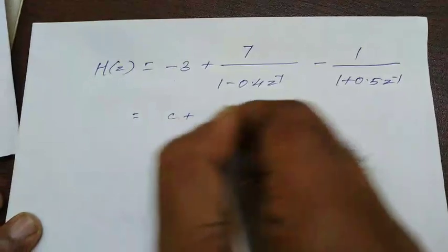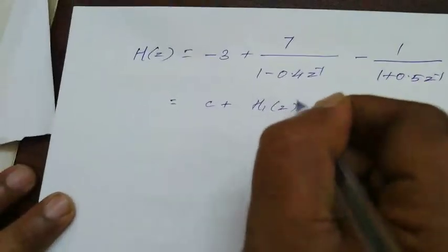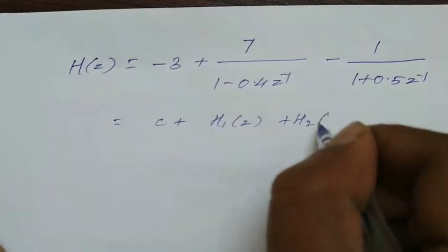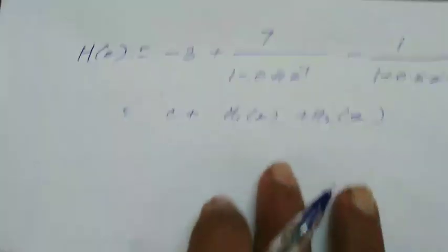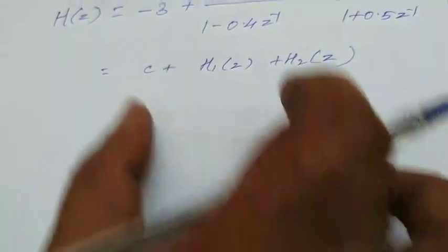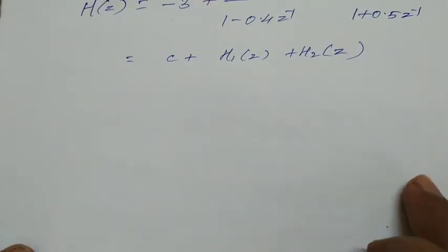That is constant plus another one system h1 of z. Next, the third system is h2 of z. Now, we have to combine and draw these things in parallel form structures and combine the result.